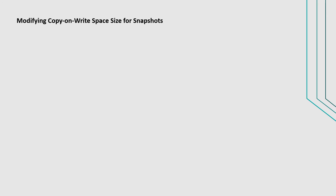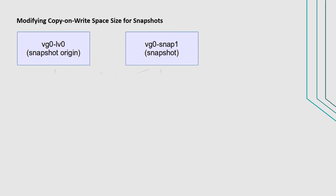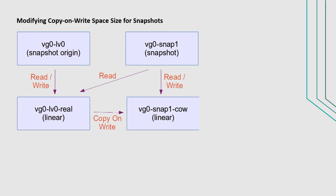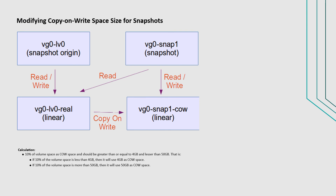The last topic to discuss is modifying copy-on-write space size for snapshots. The Linux LVM snapshot of the DDB, hosted on a Linux machine, requires free space that must follow a certain calculation: 10% of volume space as COW space, and it should be greater than or equal to 4 GB, and less than 50 GB. That is, if 10% of the volume space is less than 4 GB, then it will use 4 GB as COW space.